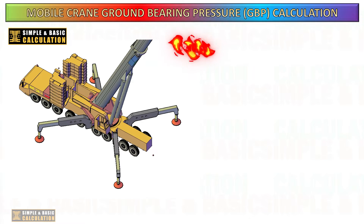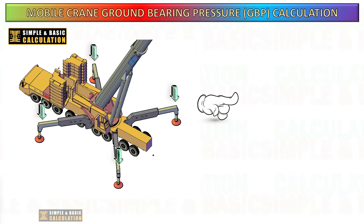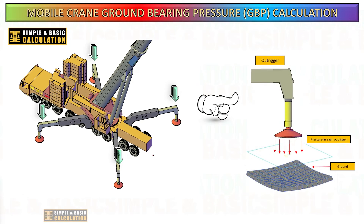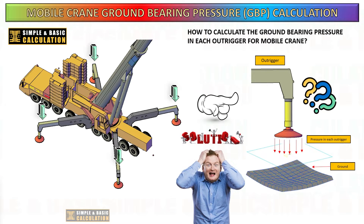This video will explain the method of manually calculating the ground bearing pressure for the outrigger of a mobile crane. Understanding the GBP — ground bearing pressure — is crucial for maintaining the safety of crane operations by mitigating the risks of ground instability, soil failure, and matting issues. Surpassing the maximum load that the ground can support can result in incidents, overturns, or the collapse of the crane, putting the crane operator, surrounding workers, and property at risk.